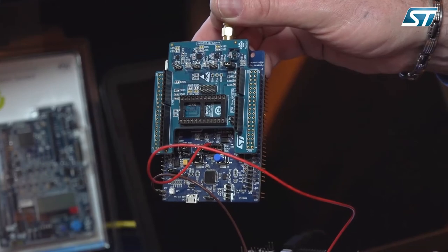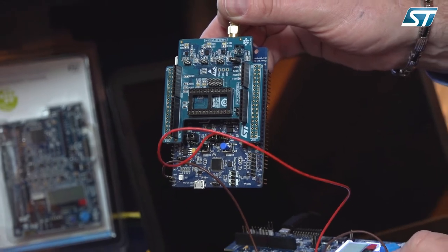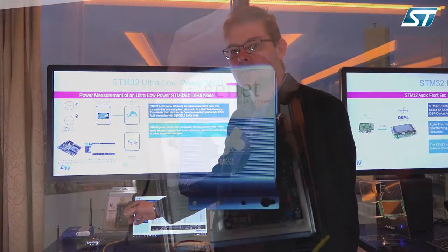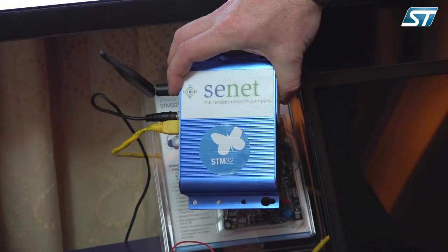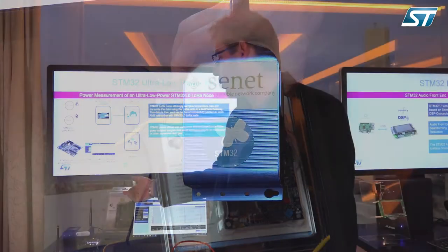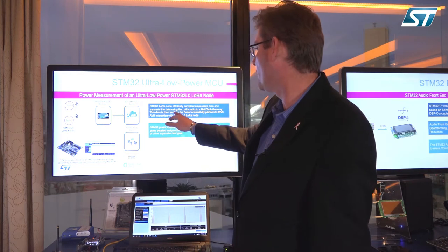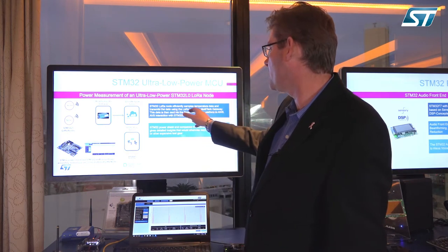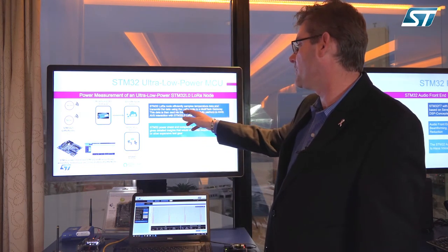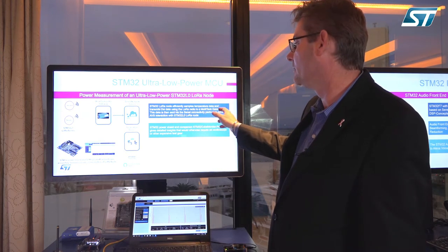What you're looking at here is a LoRa board — a master. The slave has a temperature sensor built onto it. Periodically, every 30 seconds, it's feeding data to CNET. CNET is feeding it up through a wired connection to the internet to AWS. We're efficiently measuring samples of temperature data and transmitting it through the LoRa radio to the Multitech gateway.